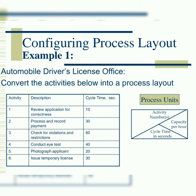The activities follow a sequence: from activity one — reviewing the application for correctness — we move to activity two, processing and recording payment, then activity three, and so on. We are going to link them in order using arrows. Each activity is drawn as a rectangle with three sections: the activity number, the cycle time in seconds, and the capacity per hour.